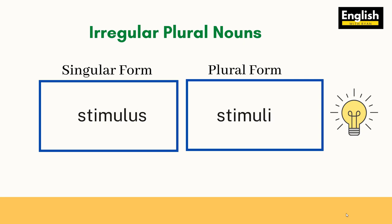The singular form of this word is 'stimulus,' and the plural form is 'stimuli.' You may ask why — well, it is irregular. This one is a bit confusing: 'quiz' in its singular form has one Z, but when you make it plural you add another Z, so you have double Z and then ES — 'quizzes.'